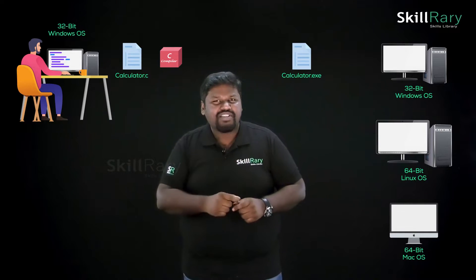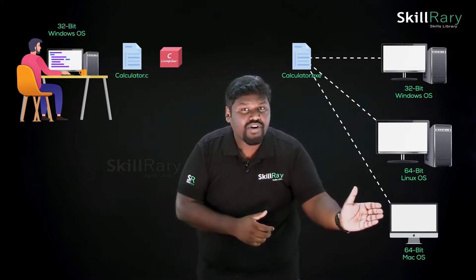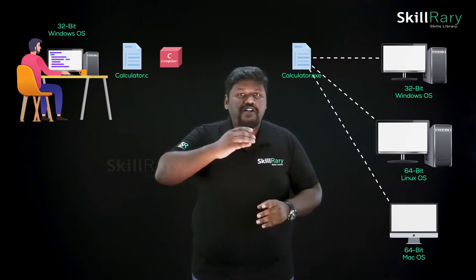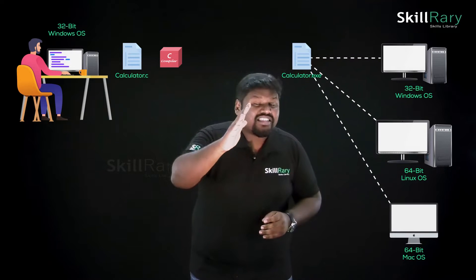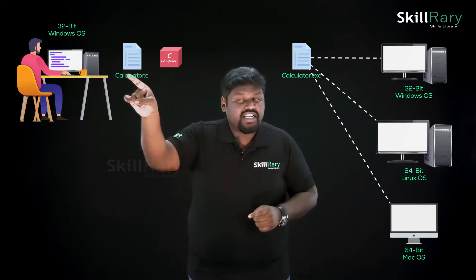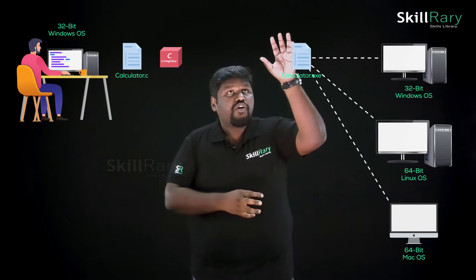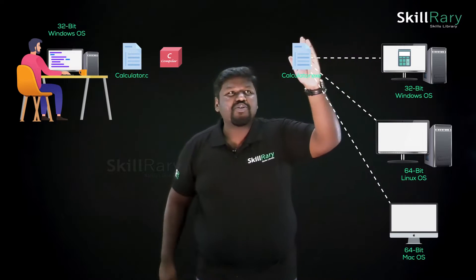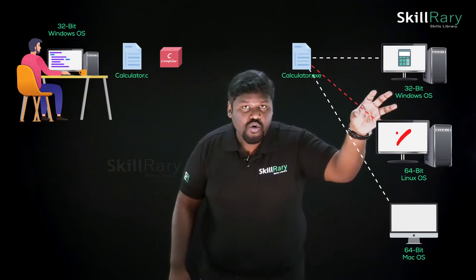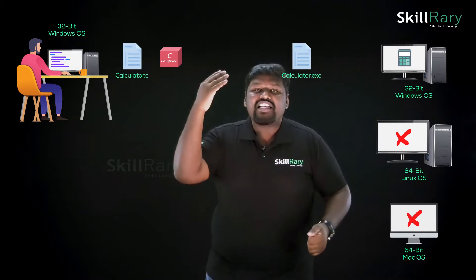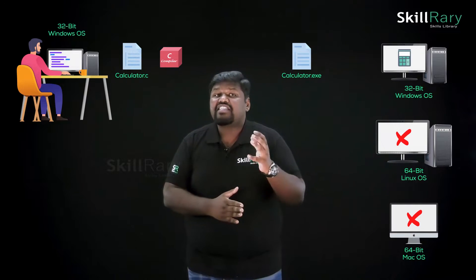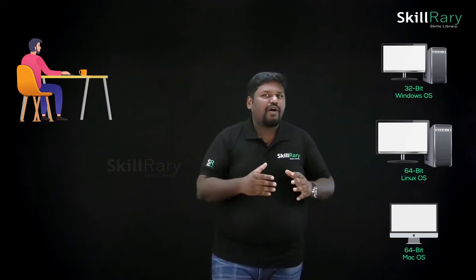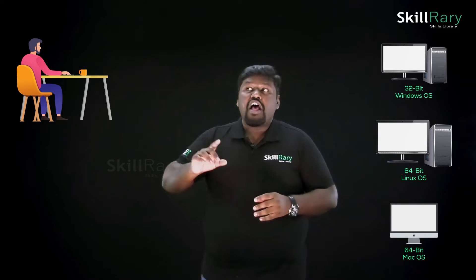Now, which machine can understand this executable file? The C compiler directly converts the high-level language into a specific machine language for 32-bit Windows architecture. Therefore, this executable file can only be executed on system one — not on system two or system three. This design is considered platform-dependent, and hence C is a platform-dependent language.